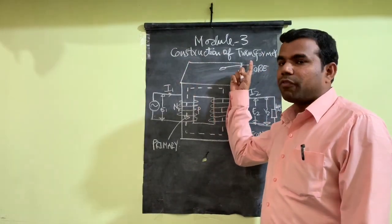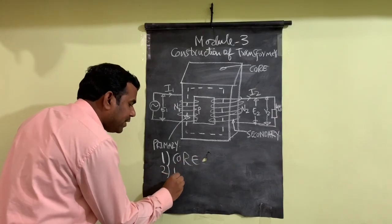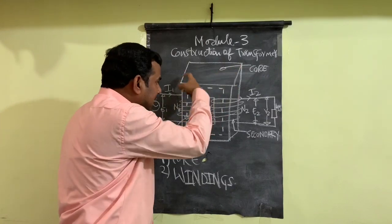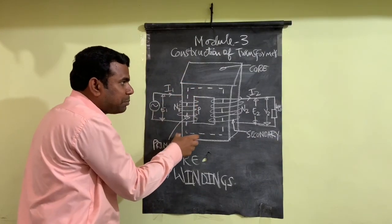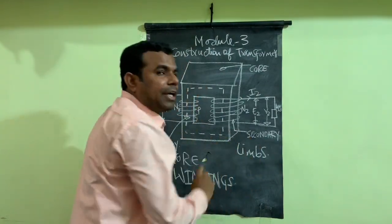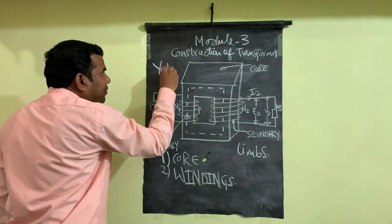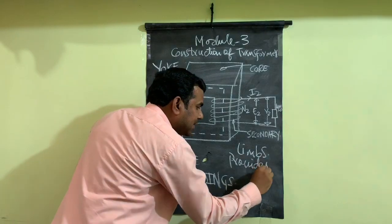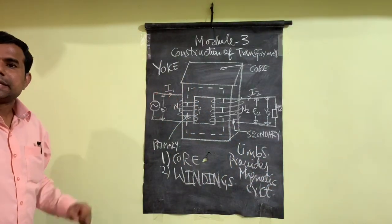Now we will study the construction of a transformer. A transformer basically consists of two parts: the first one is the core and the second one is windings. The core is either square or rectangular in shape. There are two vertical portions called the limbs of a transformer, and the top and bottom horizontal portions are called the yoke of the transformer. The purpose of the core is that it provides the magnetic circuit, and this core is made up of iron.